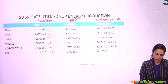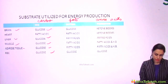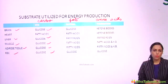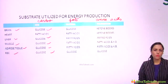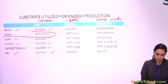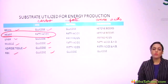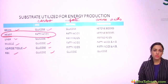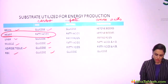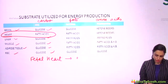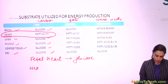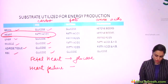In the fed state, glucose is used by the brain, liver, muscle, adipose tissue, and RBCs — most body organs are using glucose. But the heart uses fatty acids even in the fed state. This is important to learn: the heart uses fatty acids even in the fed state.